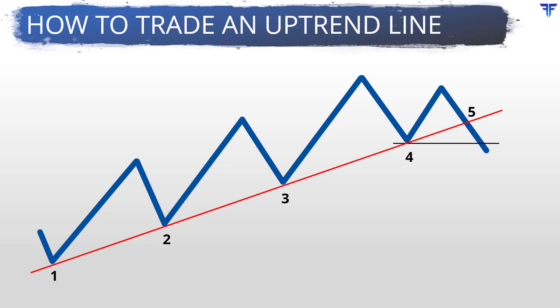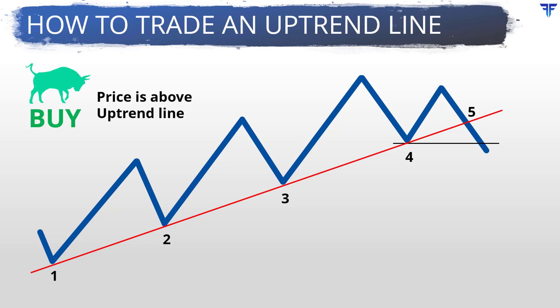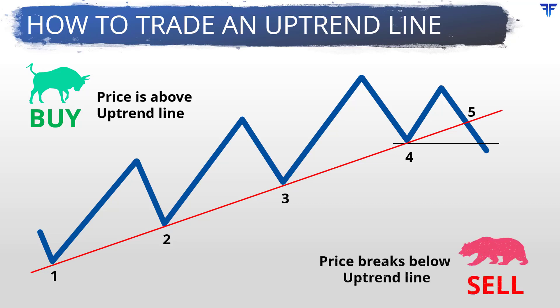In short, when an uptrendline is validated, one could use subsequent price corrections towards the uptrendline to buy the security. In case the uptrendline breaks, one should be looking to exit long positions and potentially look to establish short positions.